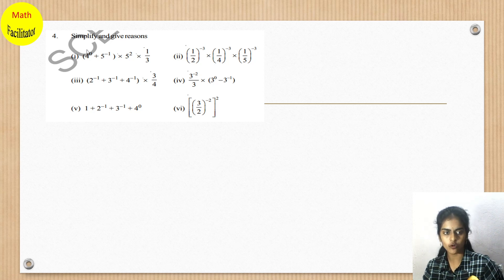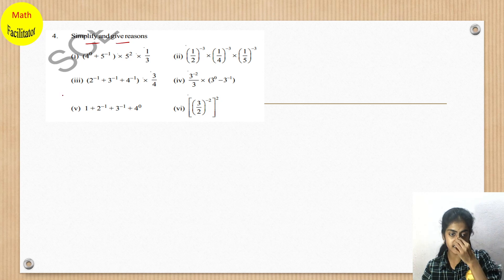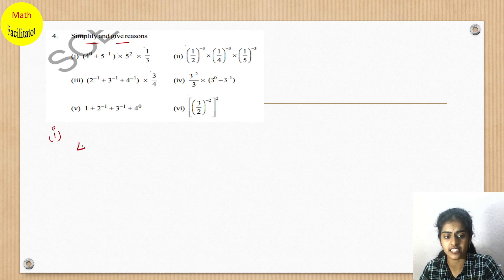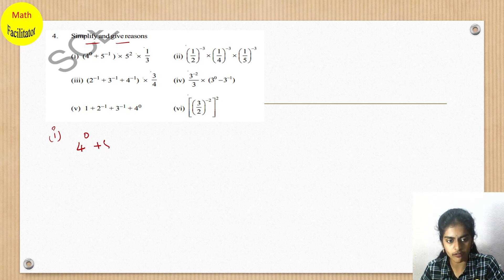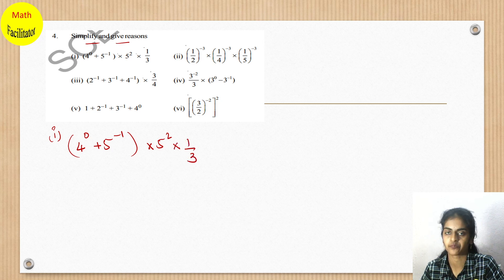So question number 4 is: simplify and give reasons. The first bit of this question — you will have to simplify: 4 to the power 0 plus 5 to the power minus 1, multiplied by 5 squared, into 1 by 3.